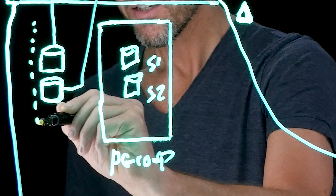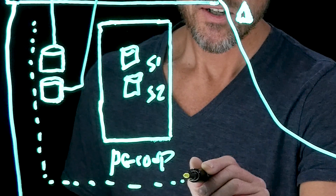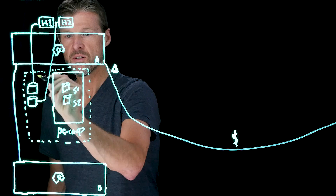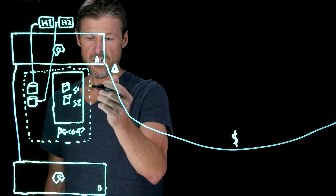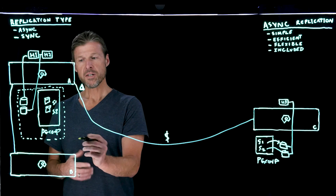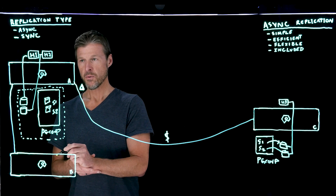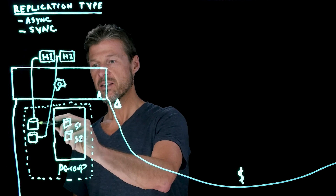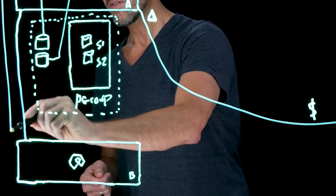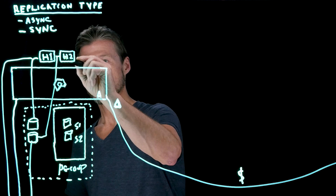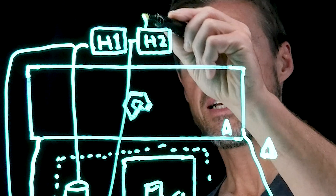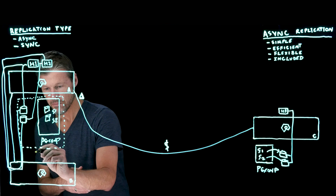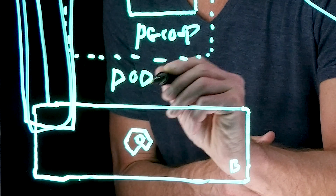I'll draw a dashed line around this entire construct to represent the pod. Now not only are the volumes members of the pod, but the protection group is also part of the pod, which gives us some additional capabilities. With ActiveCluster, host 1 and 2 can also be connected through array B back to these volumes, so each volume can be connected to the hosts through the second array. We'll call this pod 'pod 1'.